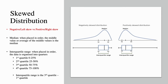The skewed distribution: a negative or left skew versus a positive or right skew. This uses the median and the interquartile range. The median is the middle value when values are placed in order, or the average of the two middle values. The interquartile range is when data is organized into quarters — it is the third quartile minus the first quartile.